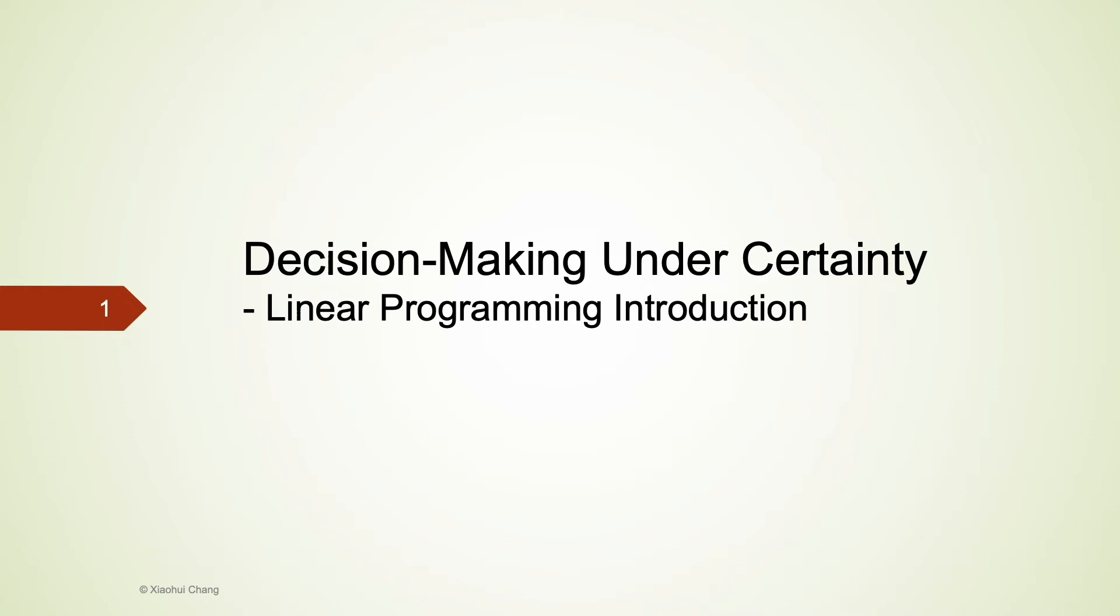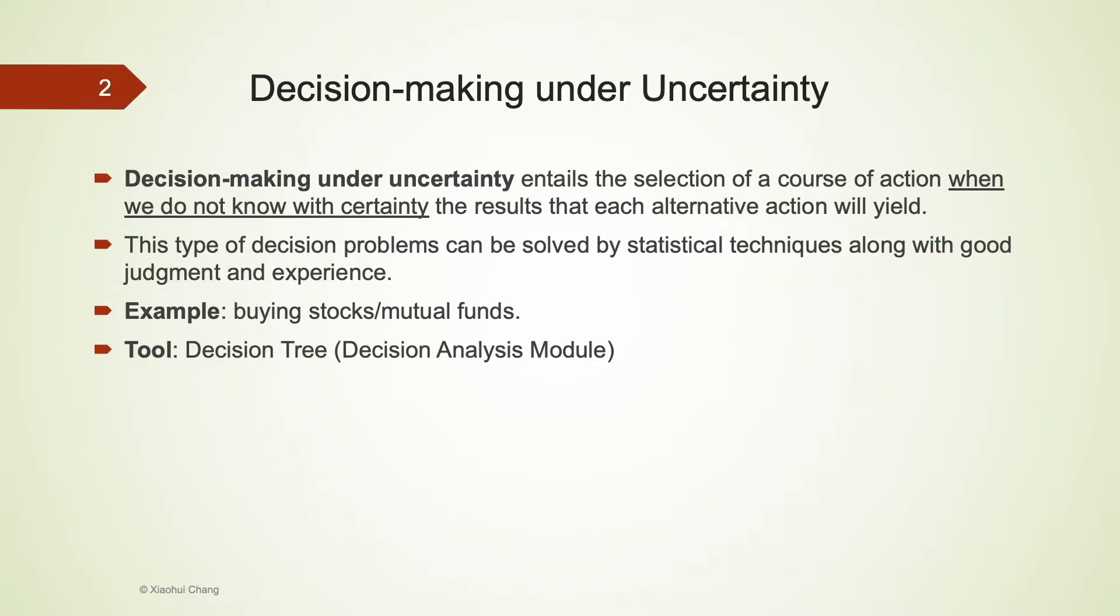This video introduces decision-making under certainty through linear programming. In other videos, we discussed decision-making under uncertainty, where we do not know for sure the results each alternative action will produce. This type of decision problem can be frequently solved using statistical techniques with good judgment and experience. The decision tree is a frequently used tool to solve this type of problem, which is demonstrated in the decision analysis module.